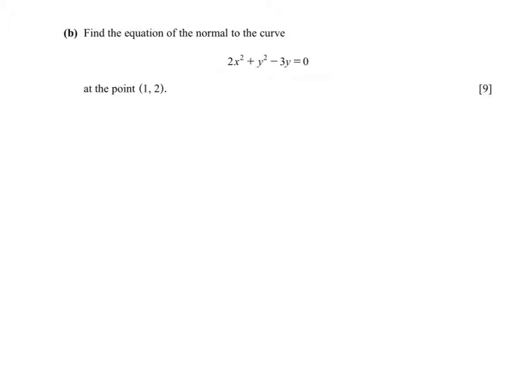Implicit differentiation - we're going to differentiate each term with respect to x. Differentiate 2x squared, we get 4x. Y squared, we get 2y, but we have to remember to multiply by dy/dx. Minus 3y, we get minus 3. Again, we have to multiply by dy/dx.